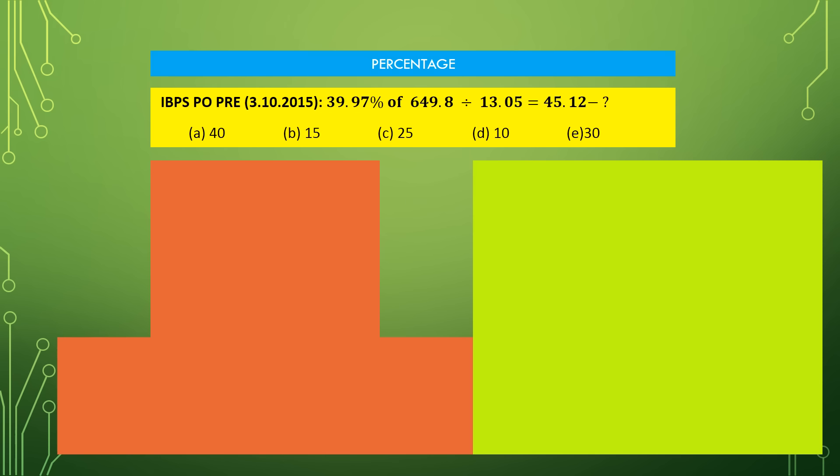The first question we are going to discuss was asked in IBPS PO Preliminary conducted on 3rd December 2015. Before going into the question, let us learn about some concepts of percentage. If we have been asked 100% of Y, it means we have to calculate Y into 100 by 100, that is it will be equal to Y.